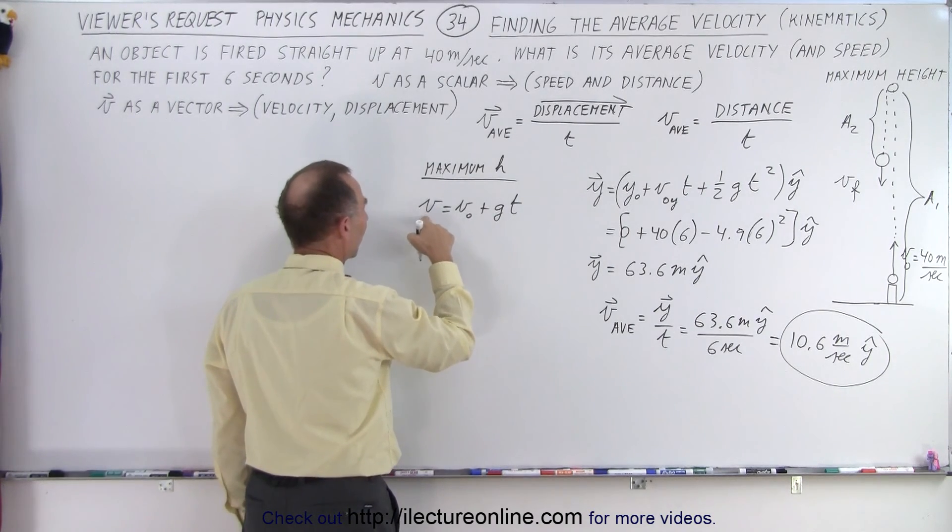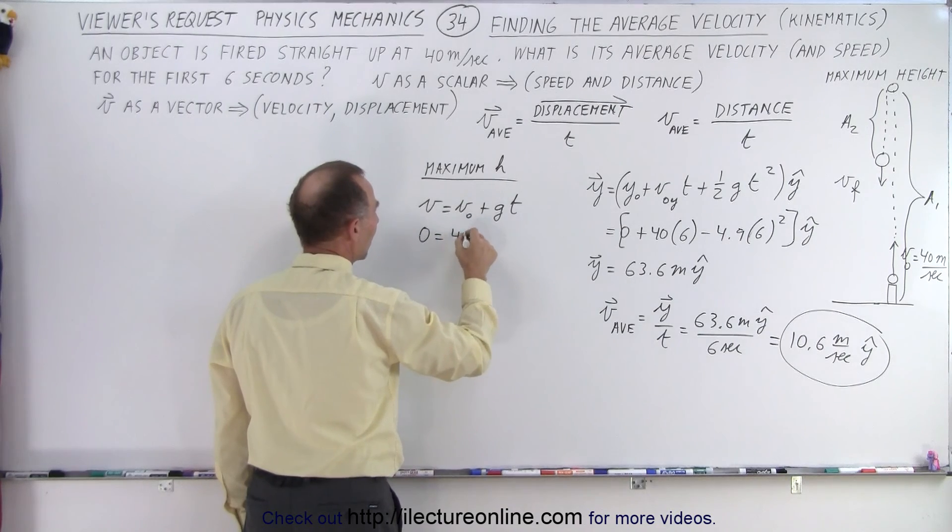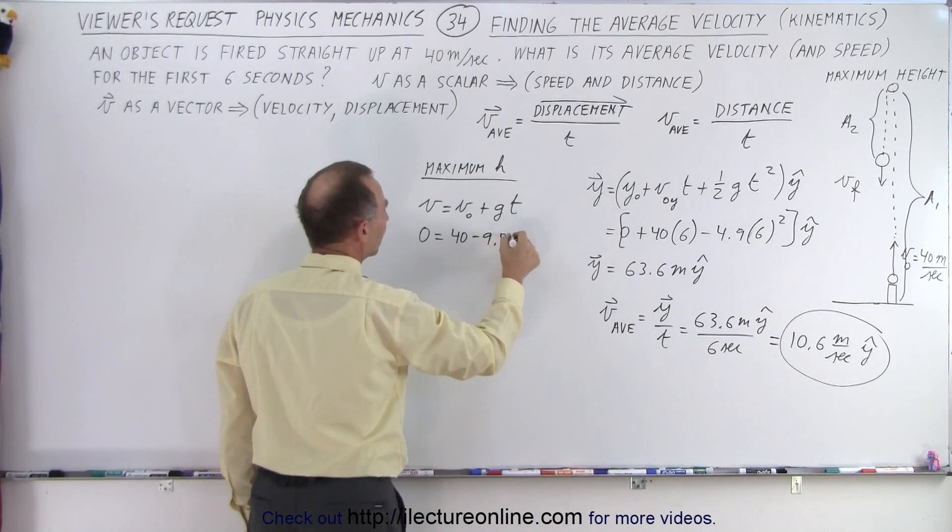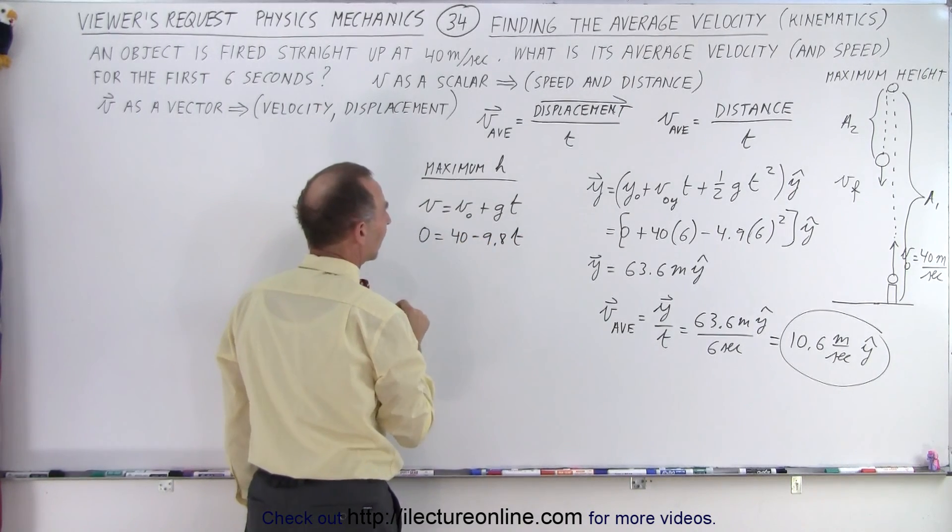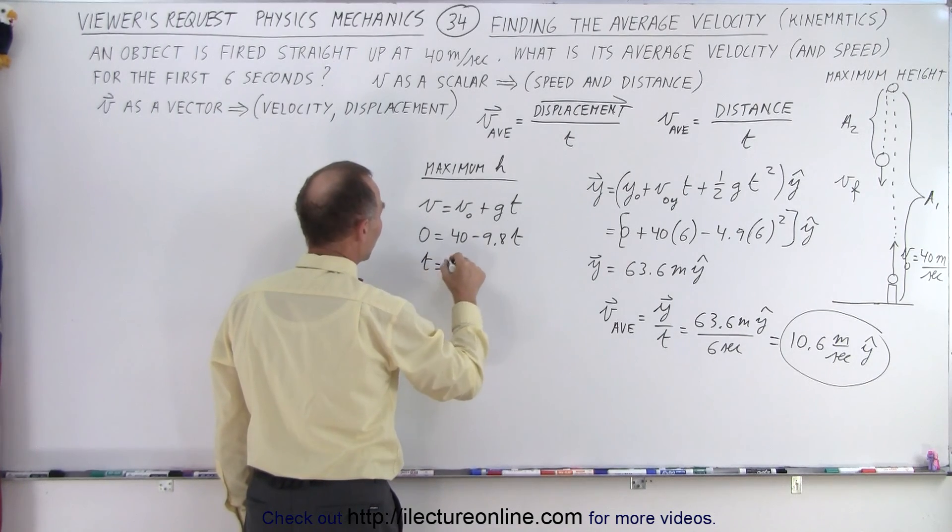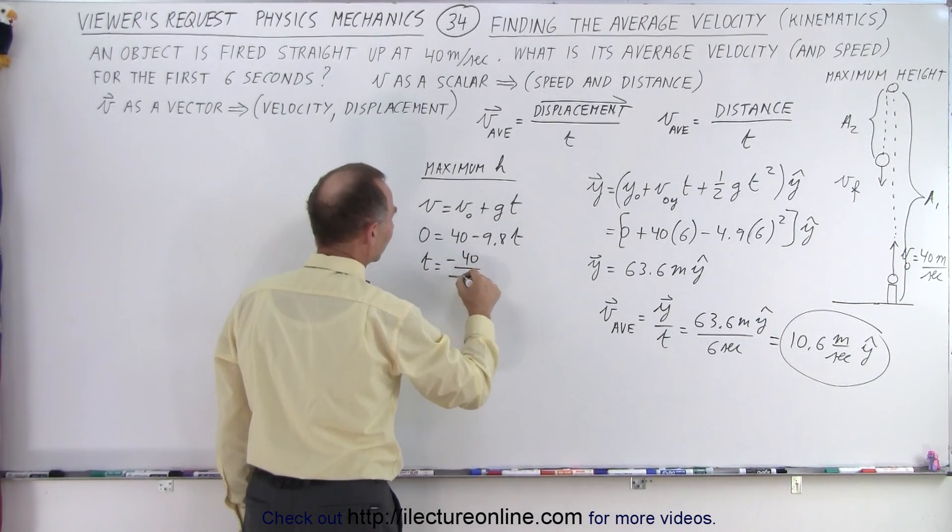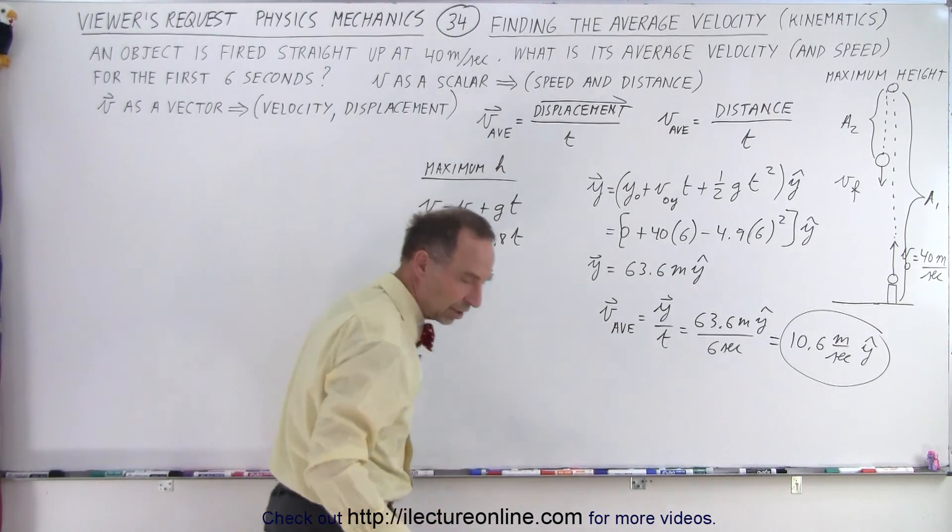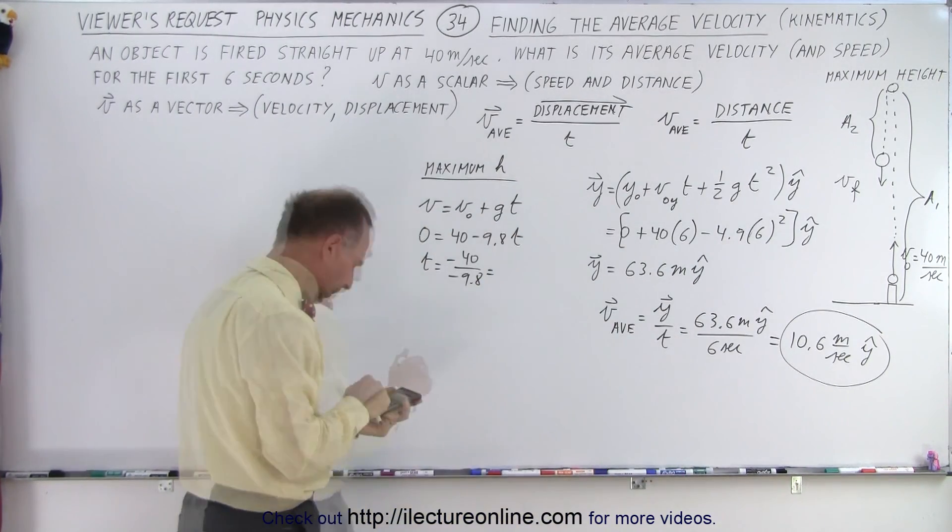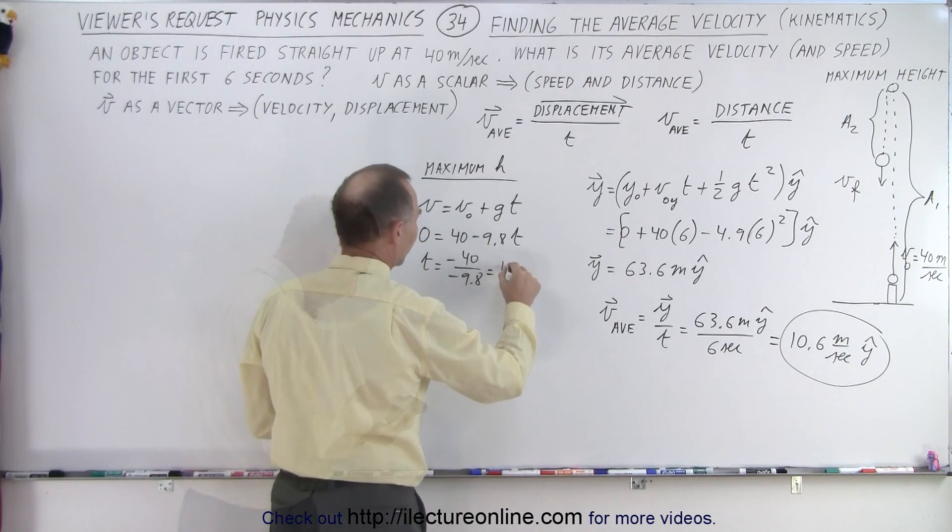So in this case, we know that the velocity at the top will be zero. So zero equals the initial velocity minus 9.8 t. And so that means that t is equal to minus 40 divided by minus 9.8, which is 4.0816 seconds.